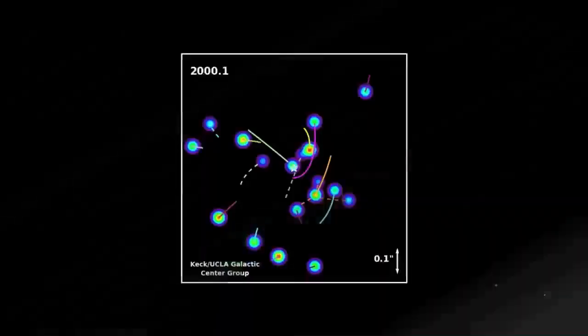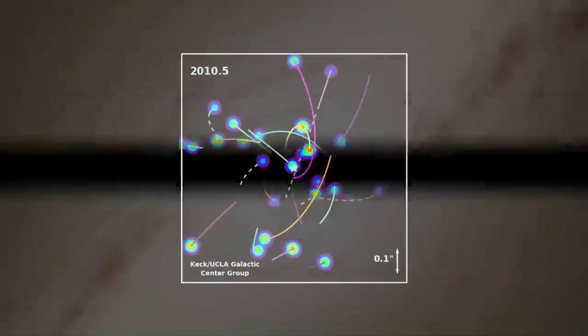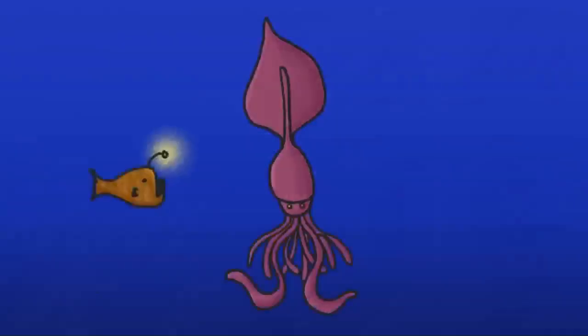Deep space may be the final frontier, but we already know more about the orbits of stars around the supermassive black hole at the center of the Milky Way than we do about the behavior of the colossal squid and other creatures that live deep in the oceans here at home.